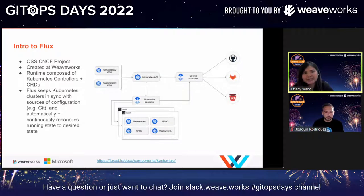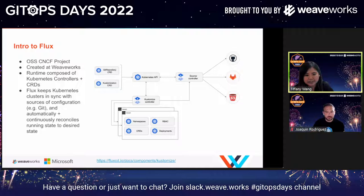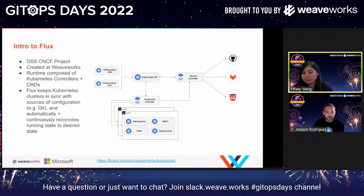GitOps itself is agnostic to tooling, but for today's workshop we're going to be using Flux. Flux is an open source CNCF project created at Weaveworks, and its runtime is composed of a set of Kubernetes controllers along with their corresponding custom resource definitions. In today's workshop, we're going to be focusing on the source controller and the kustomize controller. The Flux source controller interacts with custom resources such as Git repositories, Helm repositories, Helm charts, and buckets — and we're going to be using Git repositories today. Git repositories are how Flux knows which repository and the branch within that repository to monitor. You can also do sophisticated things like ignore certain files you don't want Flux to monitor.